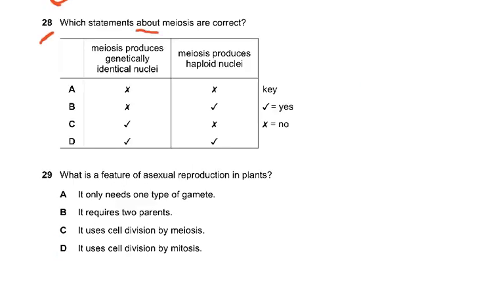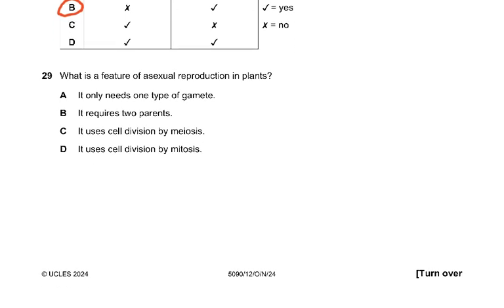Question 28. Which statements about meiosis are correct? Meiosis does not produce genetically identical cells. Meiosis does produce haploid nuclei — so the answer is B: meiosis does not produce identical nuclei, and it does produce haploid nuclei. Question 29: what is a feature of asexual reproduction in plants? In asexual reproduction there are no gametes, it doesn't require two parents, and it uses cell division by mitosis — not meiosis. So the answer to 29 is D.